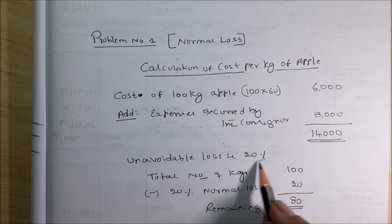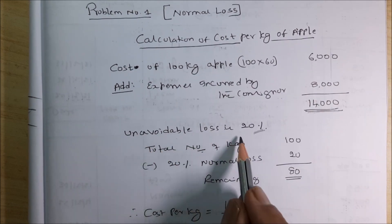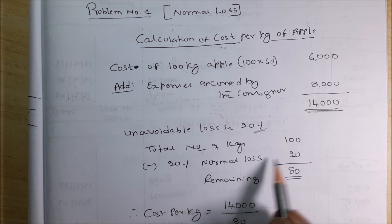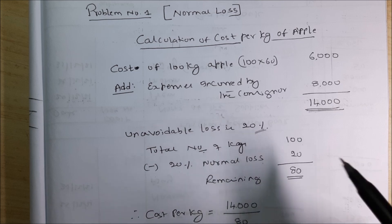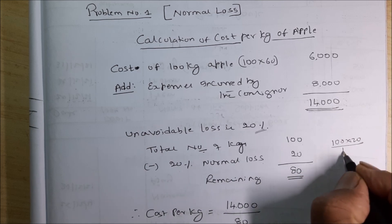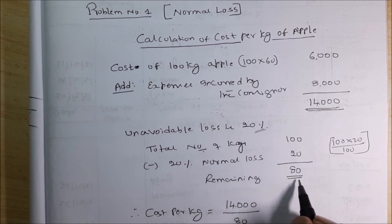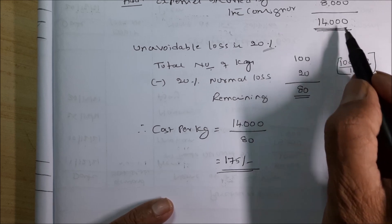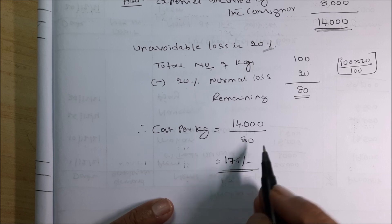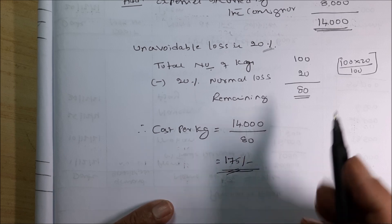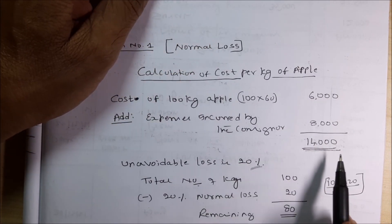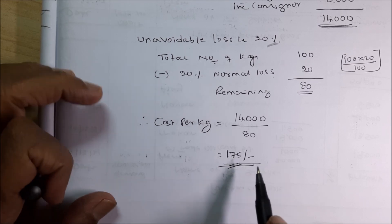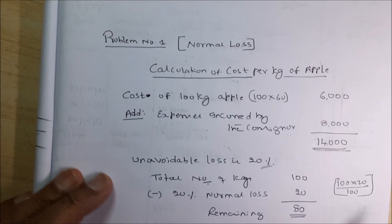There is a 20% unavoidable (normal) loss. Total kgs are 100 minus 20% normal loss. 20% of 100 = 20, so remaining is 80 apples. Now the total cost is Rs 14,000 for 80 apples. Cost per apple = 14,000 ÷ 80 = Rs 175. Earlier it was 14,000 ÷ 100 = Rs 140, but now after normal loss it is Rs 175 per kg.